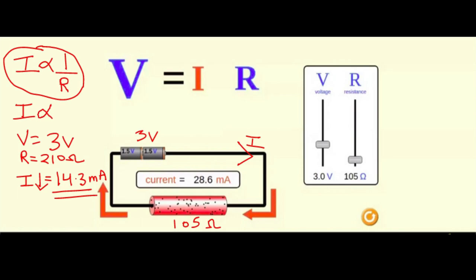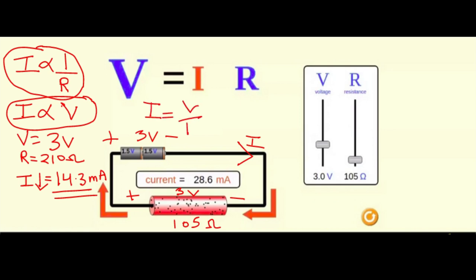The current I flowing through the conductor is directly proportional to the voltage across it. We have two noticeable expressions from the statement and from the simulation. From Wikipedia, I equals V over R — this shows that I is inversely proportional to resistance R and directly proportional to voltage V.